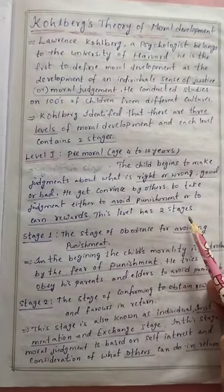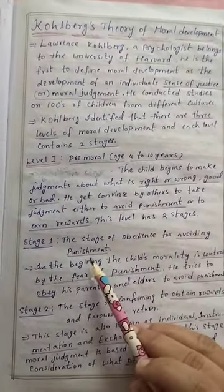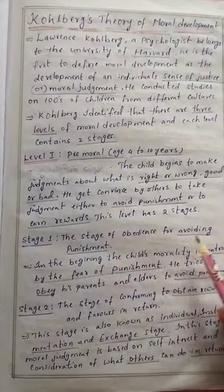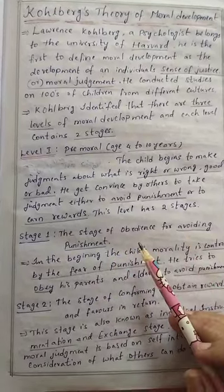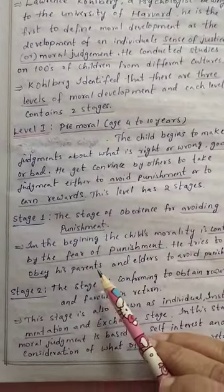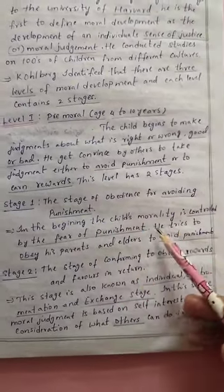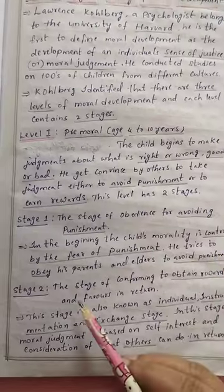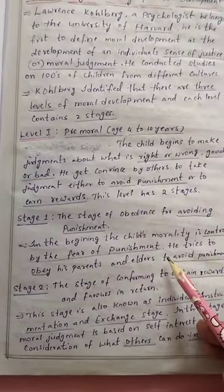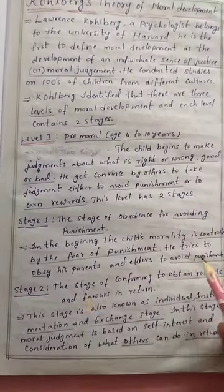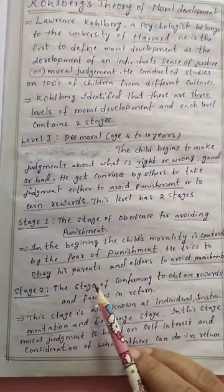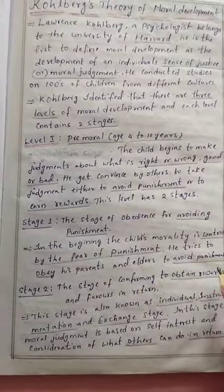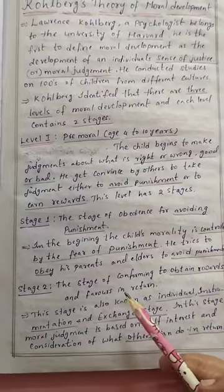This level has two stages. Stage 1 is the stage of obedience for avoiding punishment. In the beginning, the child's morality is controlled by the fear of punishment. The child tries to obey his parents and elders to avoid punishment.